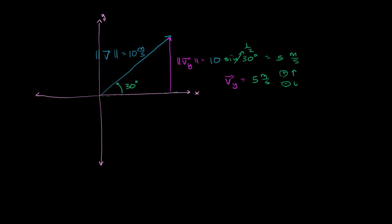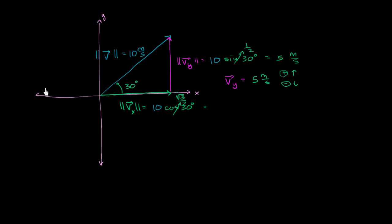We had the same issue when we talked about the horizontal vectors. This horizontal vector's magnitude is going to be 10 cosine of 30 degrees, which comes straight out of basic trigonometry. Cosine of 30 degrees is √3/2. Multiply it by 10 and you get 5√3 — 5 square roots of 3 meters per second. In previous videos I used notation where I said the vector is 5√3 meters per second.